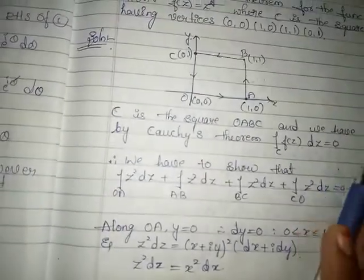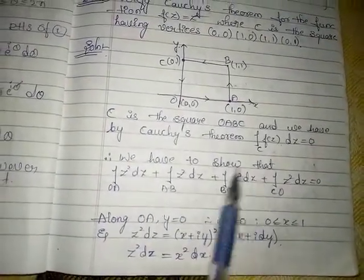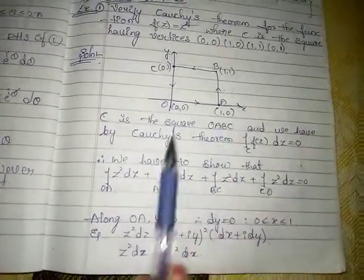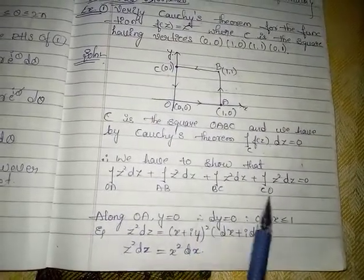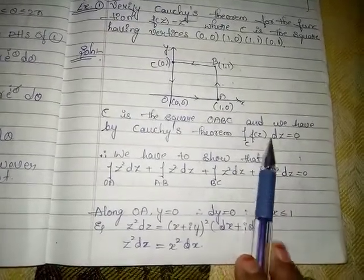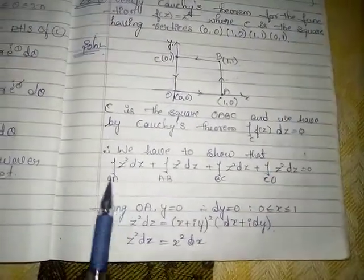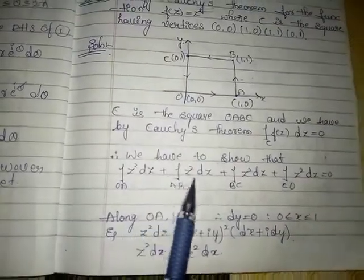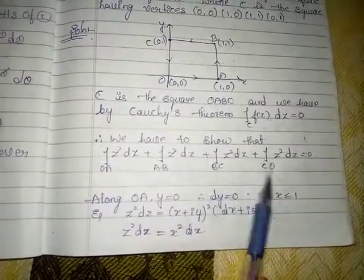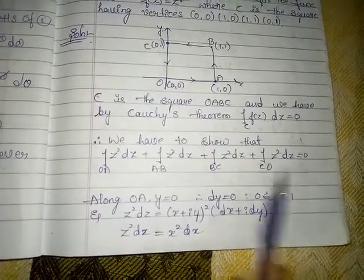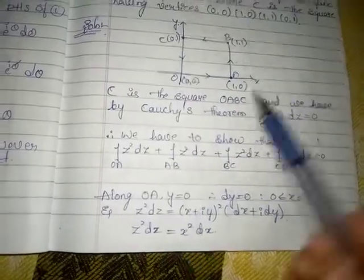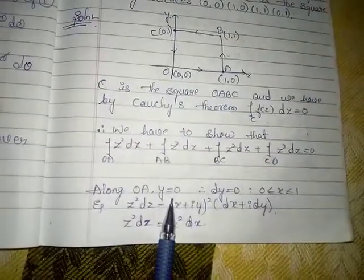We have to show that the curve C splits into four parts: OA, AB, BC, and CO. This can be written as the integration over OA of z² dz, plus integration over AB of z² dz, plus integration over BC of z² dz, plus integration over CO of z² dz, is equal to 0. This we have to prove.